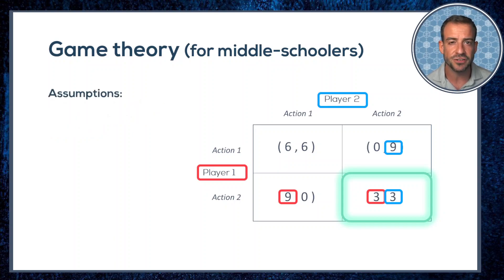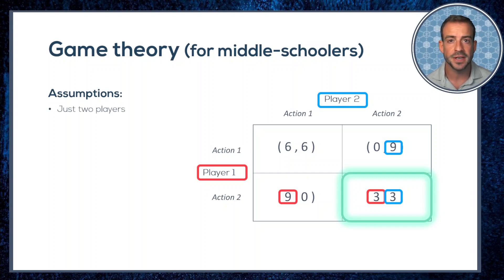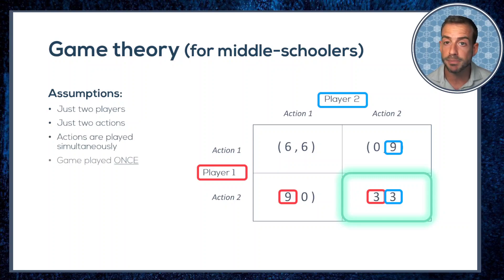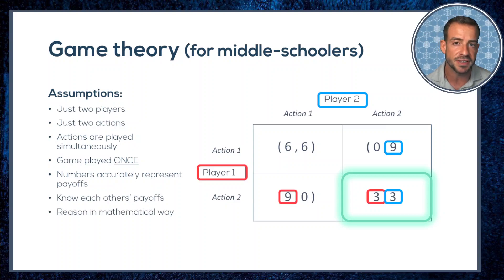This representation makes a lot of strong and restrictive assumptions about the situation being depicted. We're assuming there are just two players, they can only take two actions, the actions are played at the same time, they only play this game once, the economic payoffs can be measured and represented with the numbers shown, they each have knowledge about each other's payoffs, they reason about their situation in that specific mathematical way described earlier, and that they fully believe the other person will reason and act in the same way too.